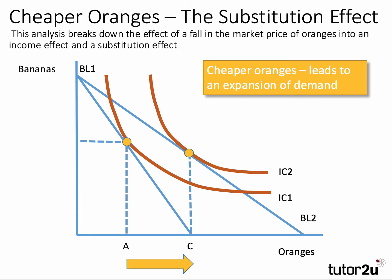Cheap oranges leads to an expansion of demand — thus far, nothing too remarkable. The key to this analysis is to think about why that's happened. The fall in the price of oranges creates two separate effects. Firstly, oranges are now relatively cheaper compared to bananas — we can see that because the gradient of the budget line has changed. And secondly, in real terms, the consumer now has more income because one of the products is cheaper, so they can move to a higher indifference curve. The change in gradient is the substitution effect; the shift to a higher indifference curve is the income effect.